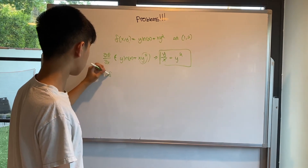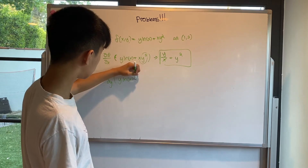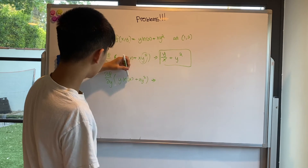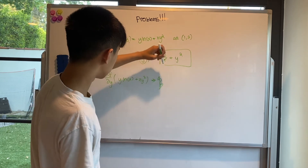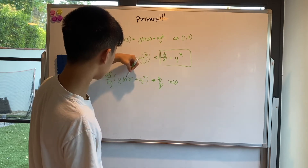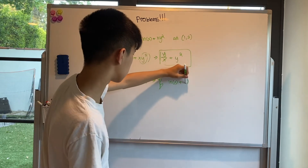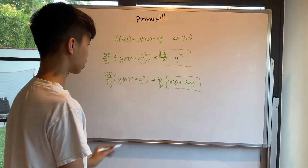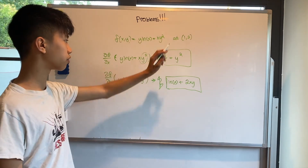Now let's find the partial derivative with respect to y. We treat ln(x) like a constant this time, and differentiate y, which gives us 1 — so we get ln(x). Then we take the derivative of y² treating x like a constant, which gives us 2xy. That's our partial derivative of f with respect to y.